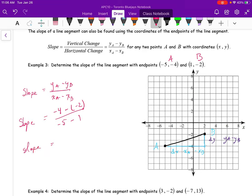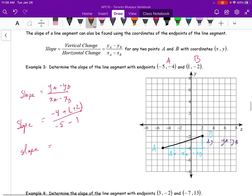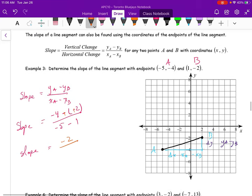Minus 4, subtract negative 2. Subtracting a negative is adding a positive. So, we get negative 2 over negative 6.